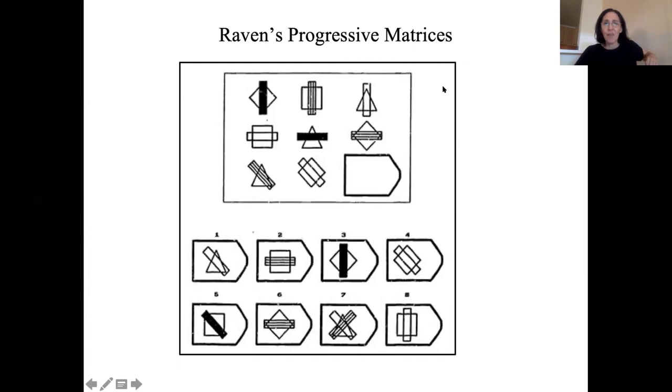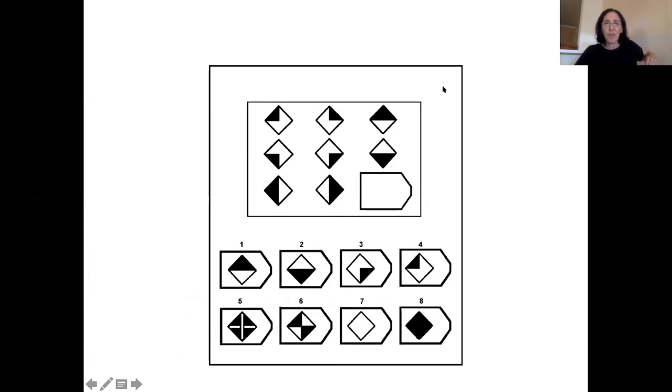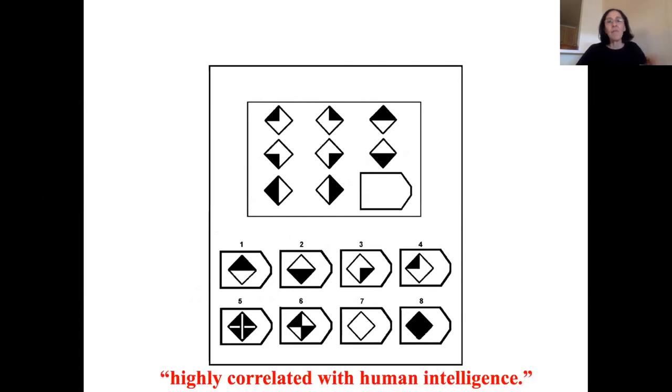Raven's progressive matrices, there's lots of examples of them. They've been said to be highly correlated with human intelligence. That's why they're used as IQ tests. For whatever reason, these problems have become recently quite popular in AI as challenges for machine intelligence.